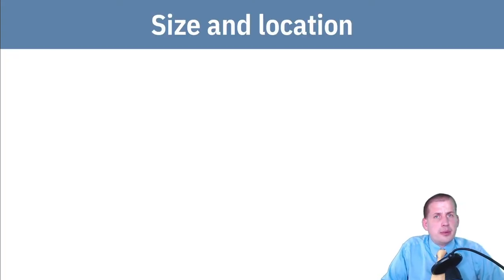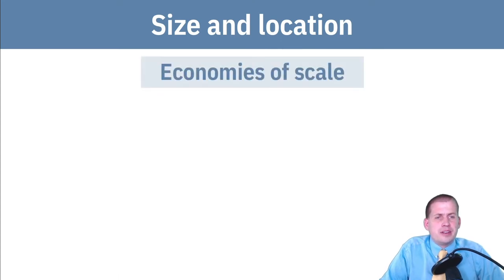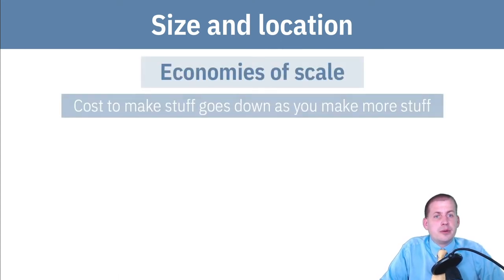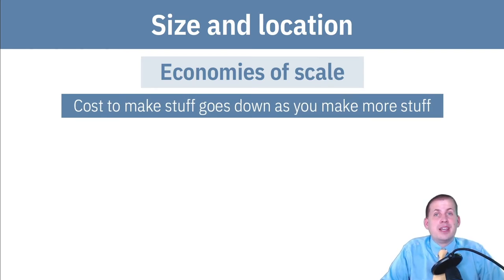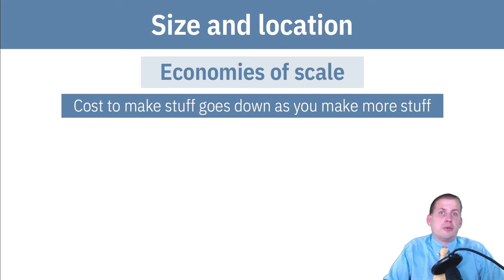There are three different things we're going to talk about here. There's this concept of economies of scale, which means that the cost to make stuff goes down as you make more stuff. So if you double the inputs, you can get more than double the outputs with economies of scale.